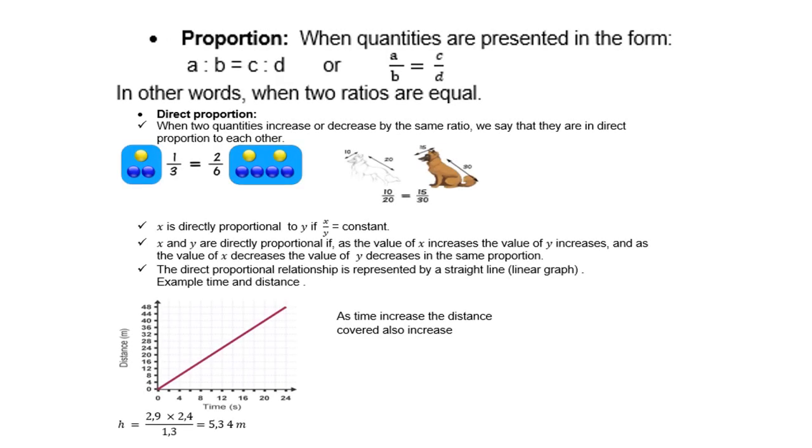Proportion. When quantities are presented in the form A is to B equals to C is to D, or in fractional form A over B equals to C over D, then we are dealing with a proportion.